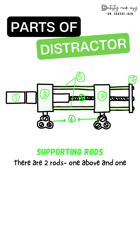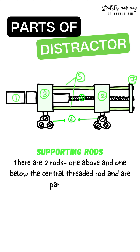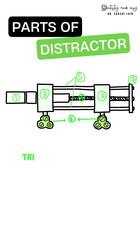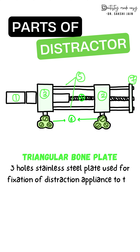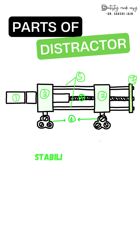The supporting rods are two rods present above and below the central threaded rod, parallel to it. The next part is the triangular bone plates — three-hole stainless steel plates used for fixation of the distraction appliance to the bone fragments which are to be separated.